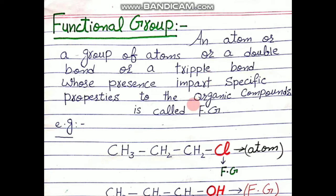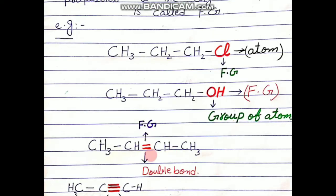Jis tarah har insan ka chehra insan ki body ko khas khasusiyyat deta hai aur ek alag pehchan deta hai, toh hum insan ke chehre ko us ki body ka functional group kehte hain. Isi tarah organic compounds ko jo atom ya group of atoms ya double bond ya triple bond us organic compound ko ek alag pehchan aur khas khasusiyyat deta hai, toh usse hum us compound ka functional group kehte hain.